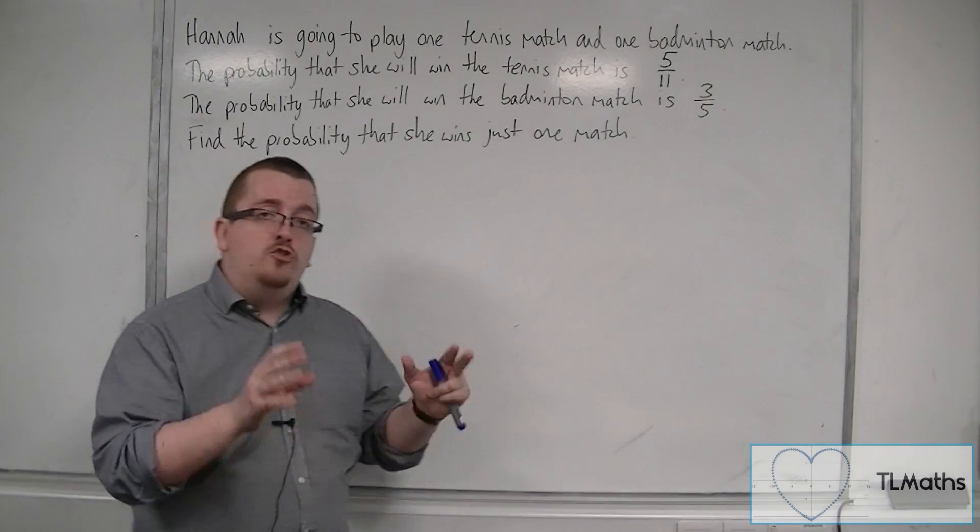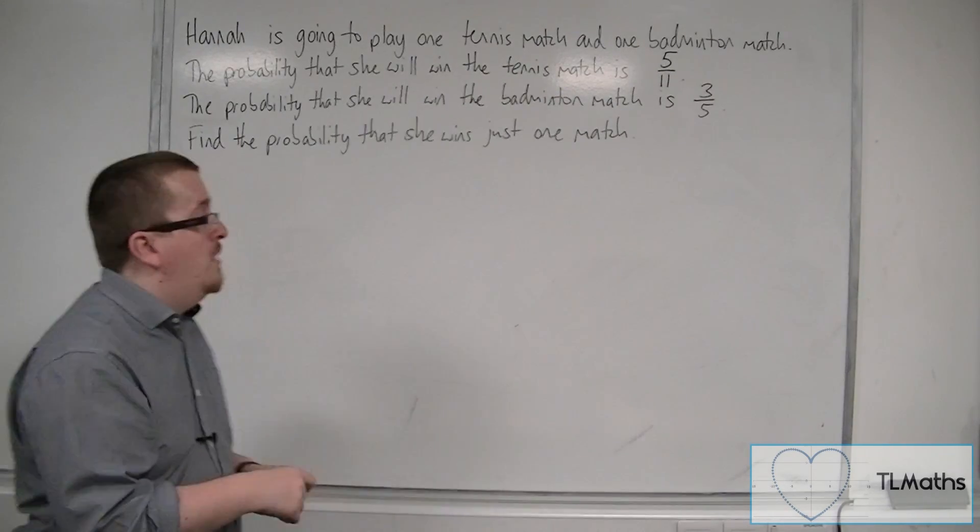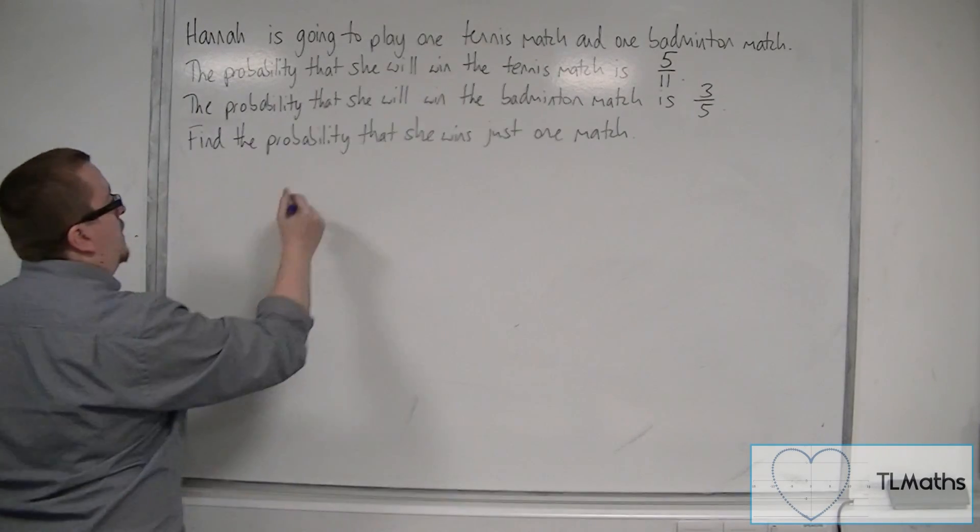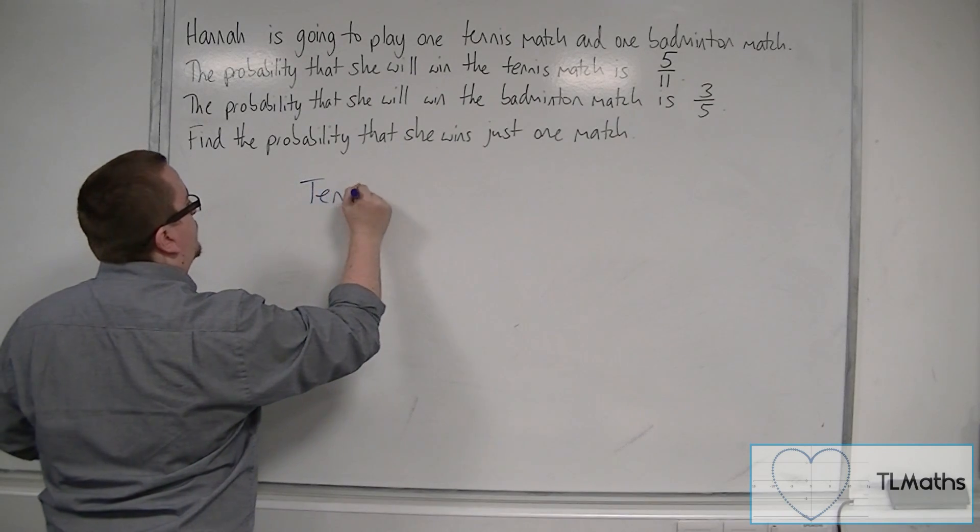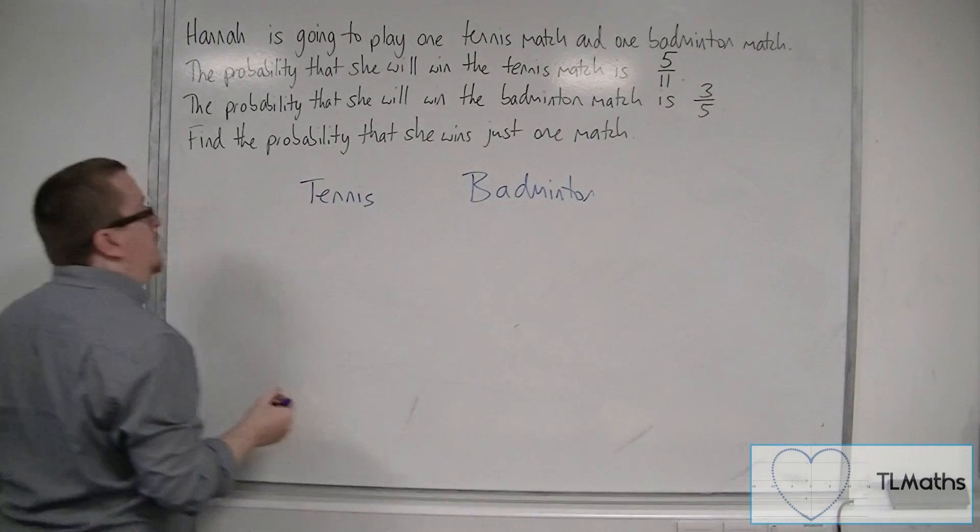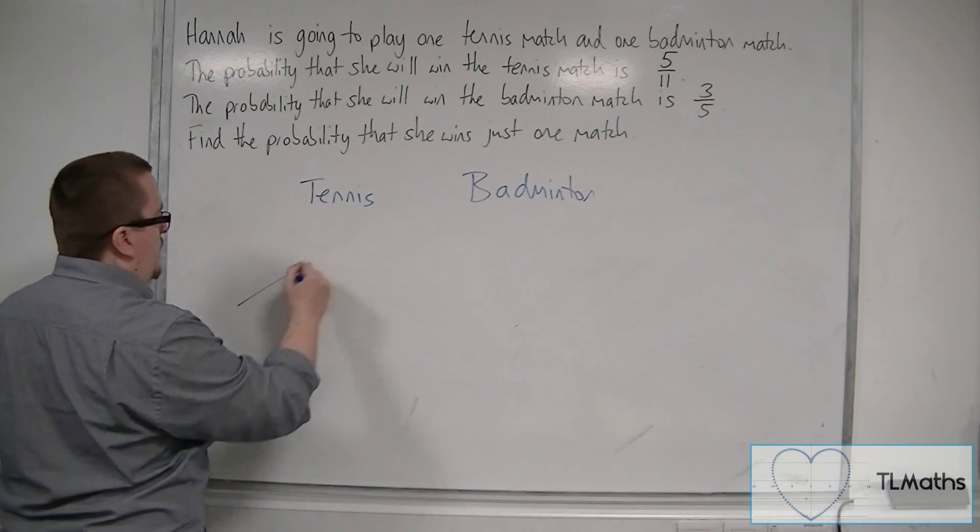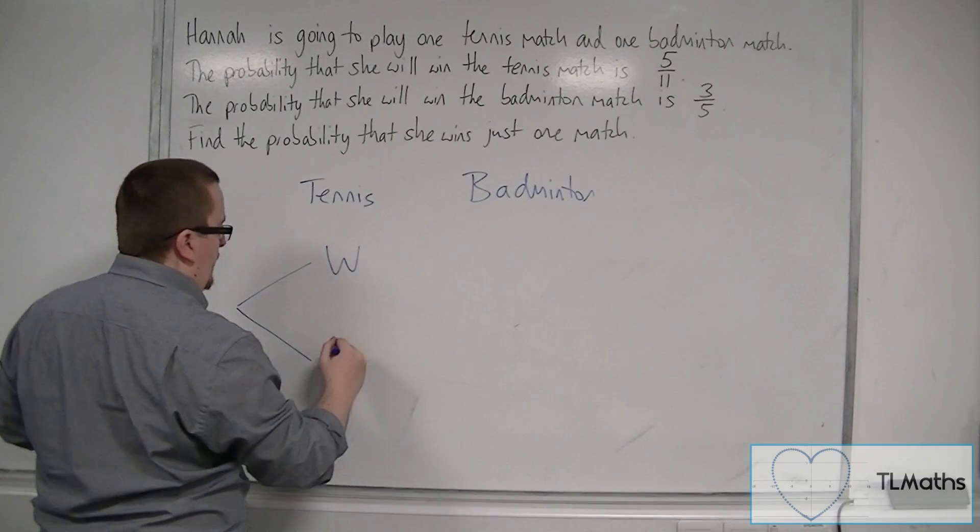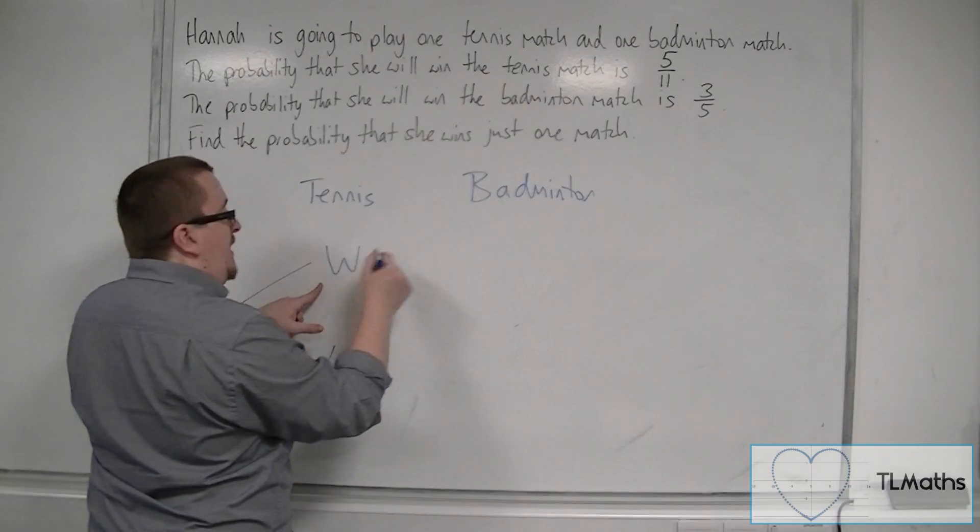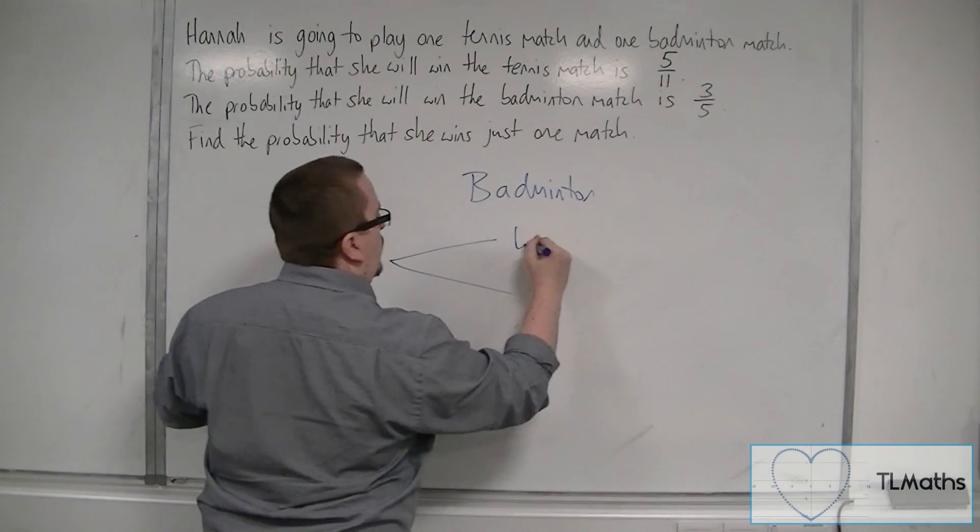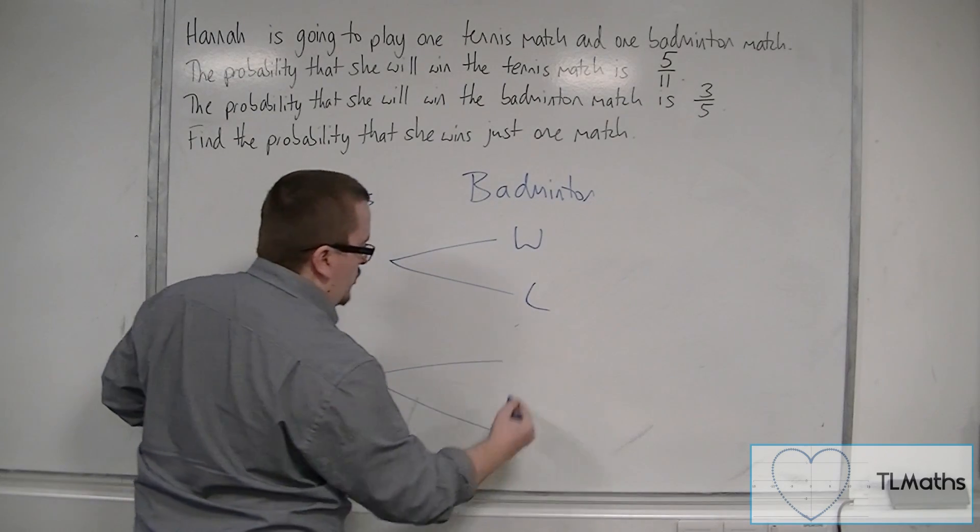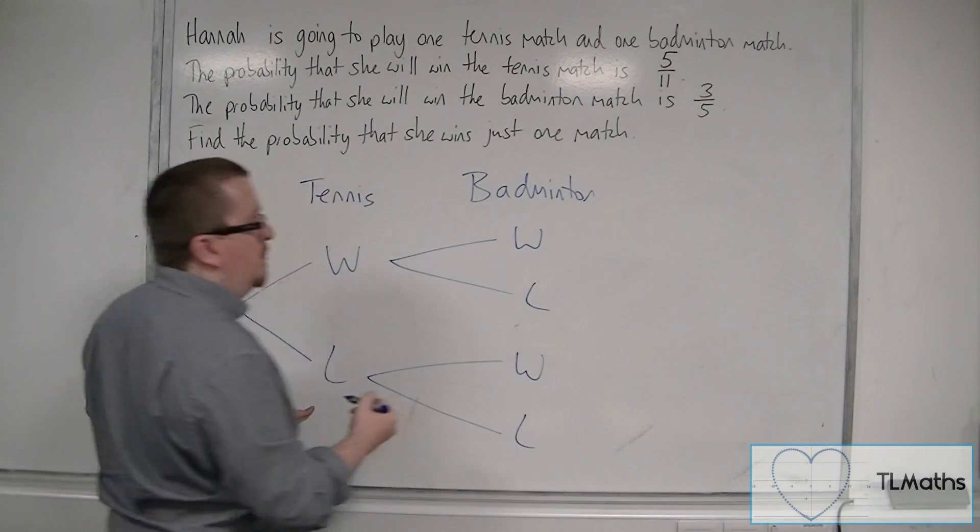We're going to draw a tree diagram to represent this information. The first probability that we're given is the tennis match, so let's put tennis there and badminton here. Hannah can either win or lose the tennis match, and she can either win or lose the badminton match. If she wins the tennis match she can either win or lose the badminton match. And if she loses the tennis match, she can either win or lose the badminton match.